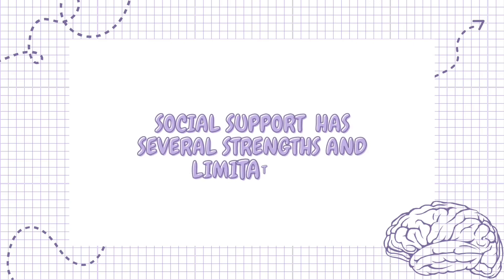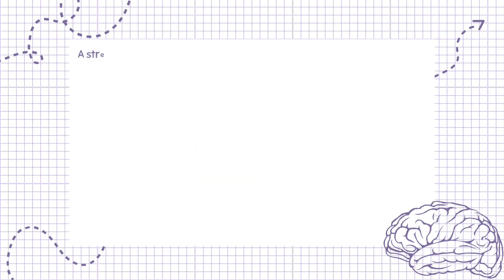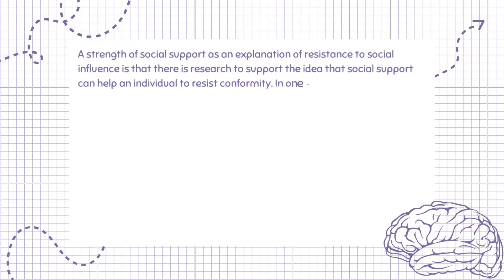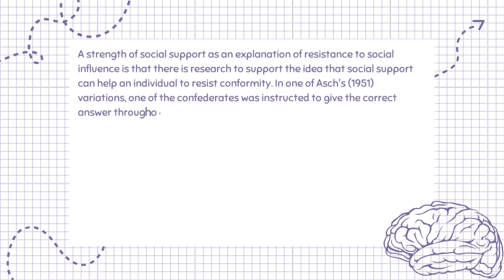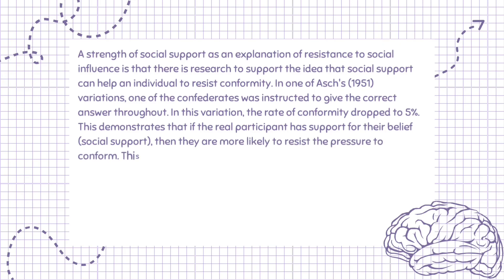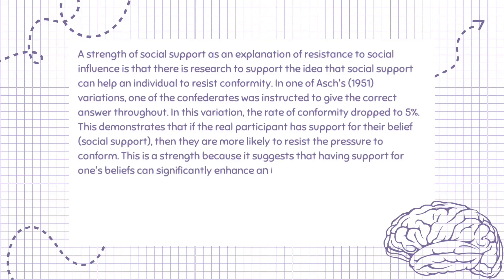A strength of social support as an explanation of resistance to social influence is that there is research to support the idea that social support can help an individual to resist conformity. In one of Asch's 1951 variations, one of the confederates was instructed to give the correct answer throughout. In this variation, the rate of conformity dropped to 5%. This demonstrates that if the real participant has social support for their belief, then they are more likely to resist the pressure to conform, significantly enhancing an individual's ability to resist conformity.